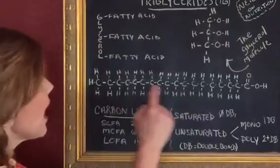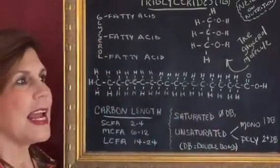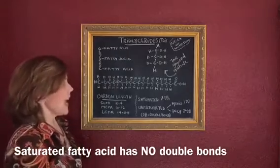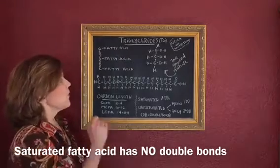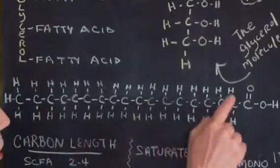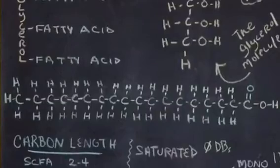This is an example of what we call a saturated fatty acid. And what makes it saturated, it is fully saturated with hydrogen atoms. So every single carbon here you can see has a hydrogen atom attached to it. That's what we call a saturated fatty acid.